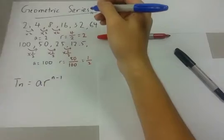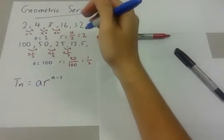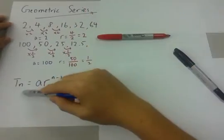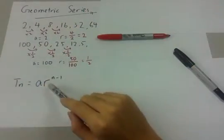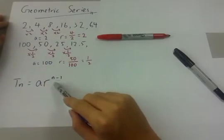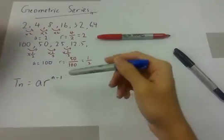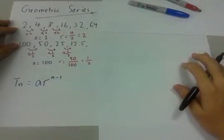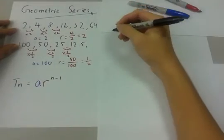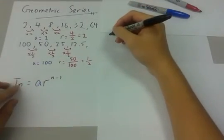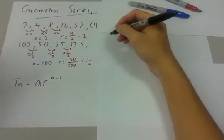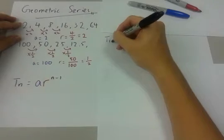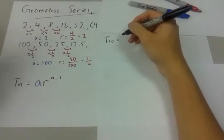So, how do we find the nth term of a series, the geometric series here? It is given by TN equals AR raised to the power of N minus 1. How do we apply this formula? Let's use the first example here. Let's say we want to find the 10th term of the first example. We write it down, notate it: T10.